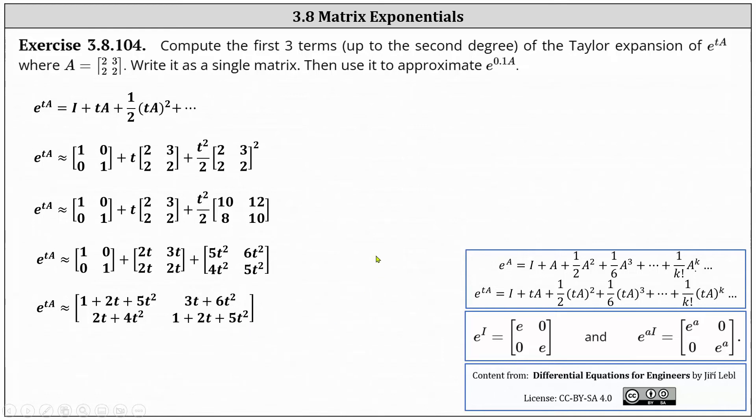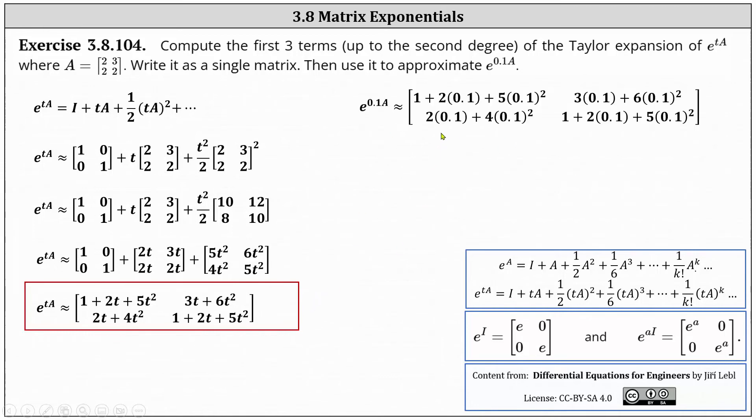This is our approximation for the matrix exponential e to the power of TA. And now we use this to approximate e to the power of 0.1A by substituting 0.1 for T and simplifying.